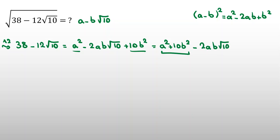Now, I want to say this is equal to this part. 12 equal to 2ab. Okay, so a squared plus 10b squared equal to 38.